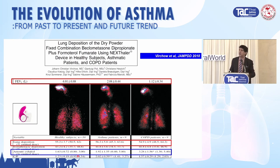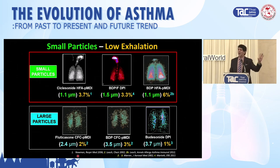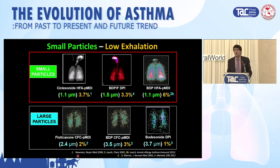Everybody asks: if you have extra fine — really small particles — don't you blow them all out? The answer is no. The top panel shows extra fine particles; the bottom shows large particles. The yellow shows exhalation — there is only a couple of percent difference. You retain your extra fine particles; they remain in the airway tree. Many people think you blow them out. You don't.